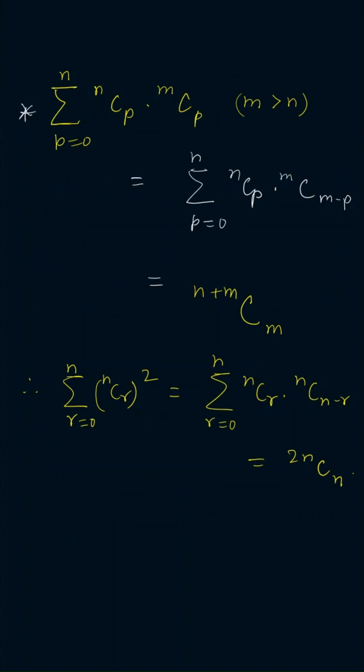So summation NCP times MCP will be equal to N plus M C M. Summation NCR R square is 2N CN. This is a very important result that you have to keep in mind.